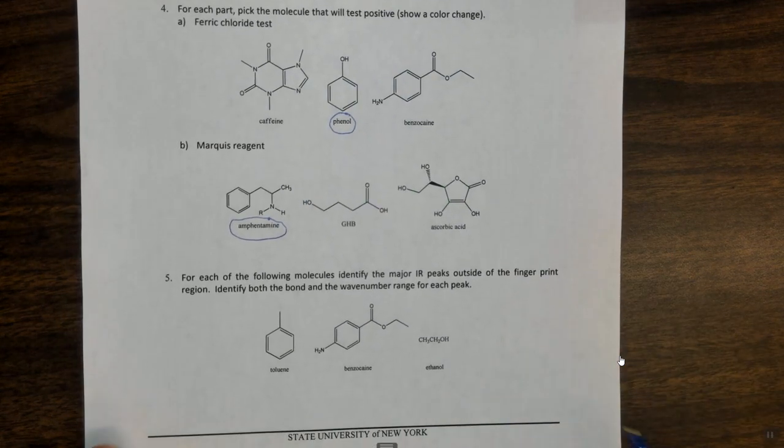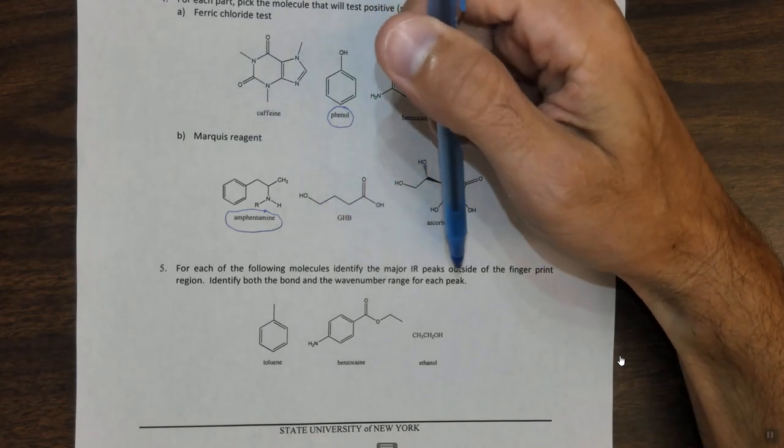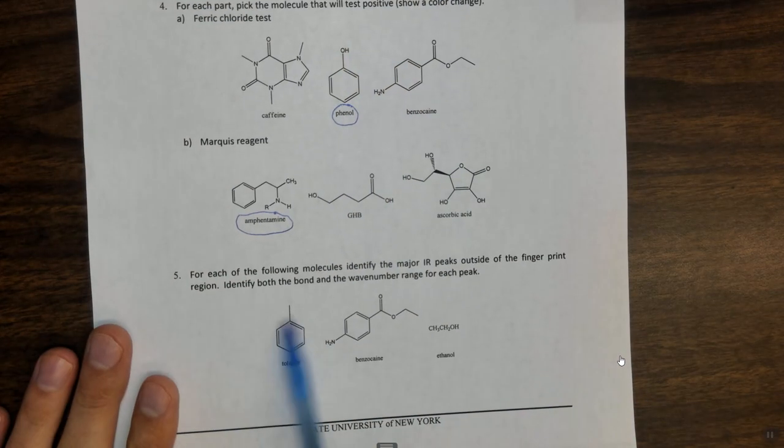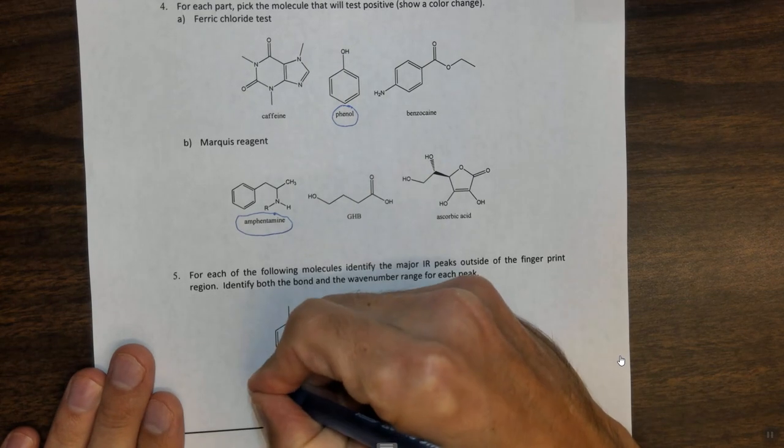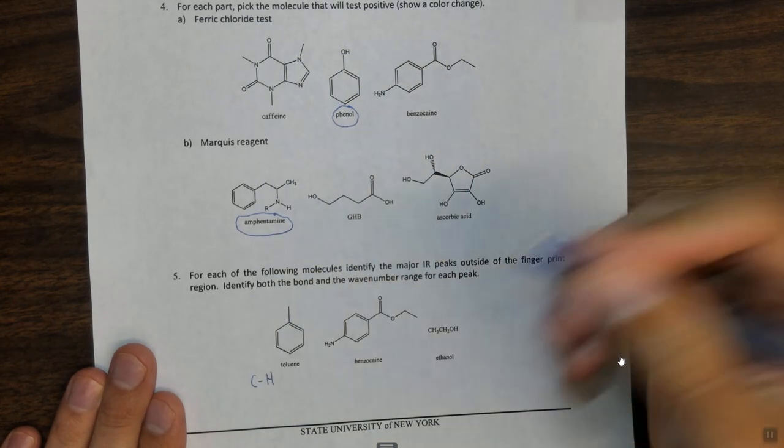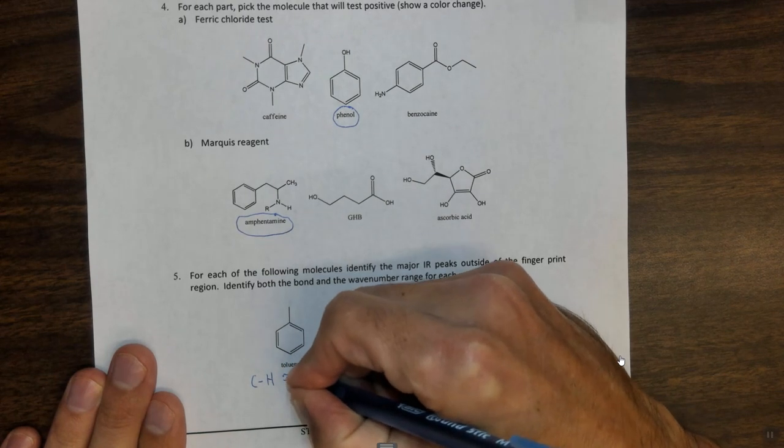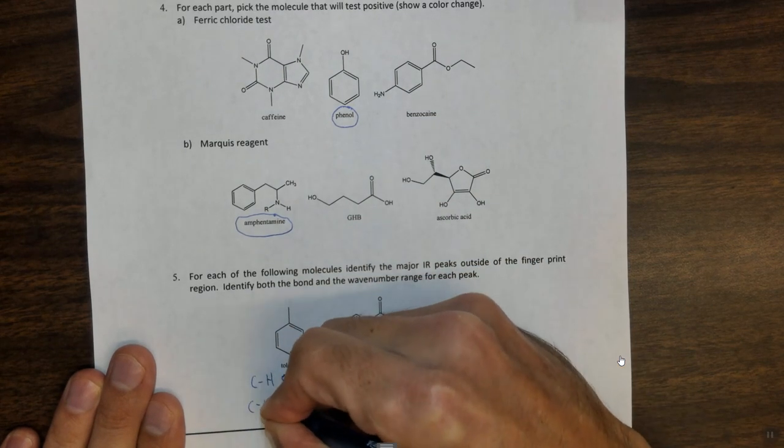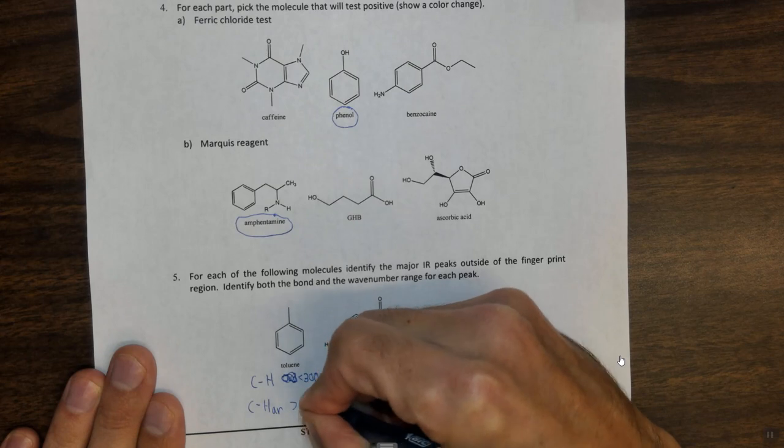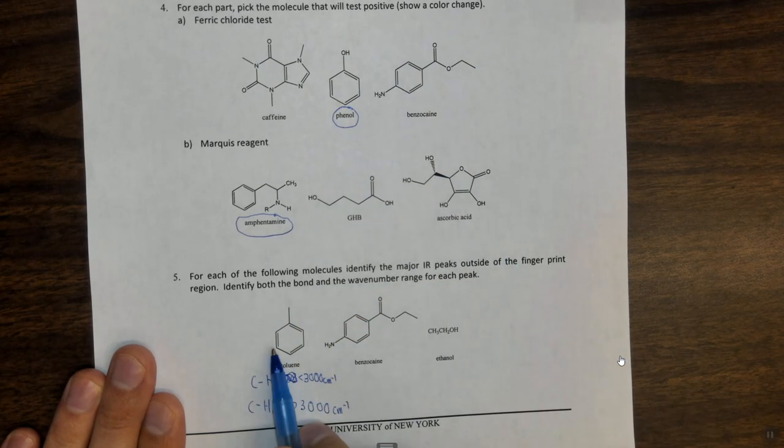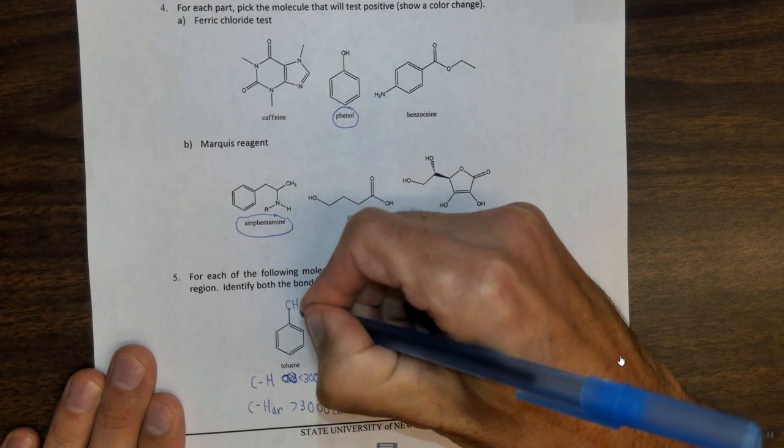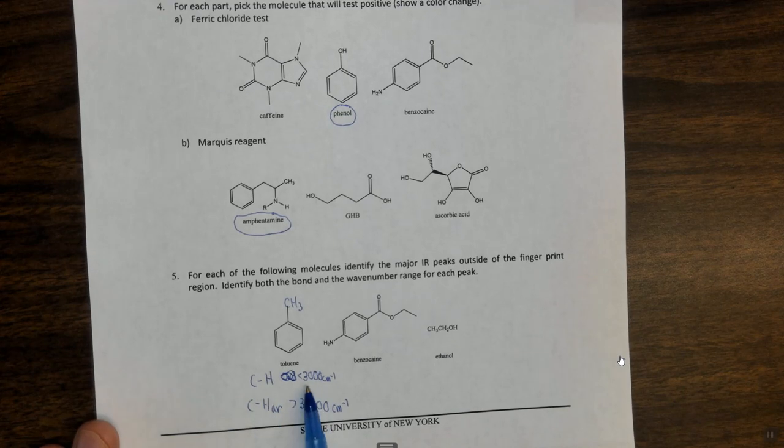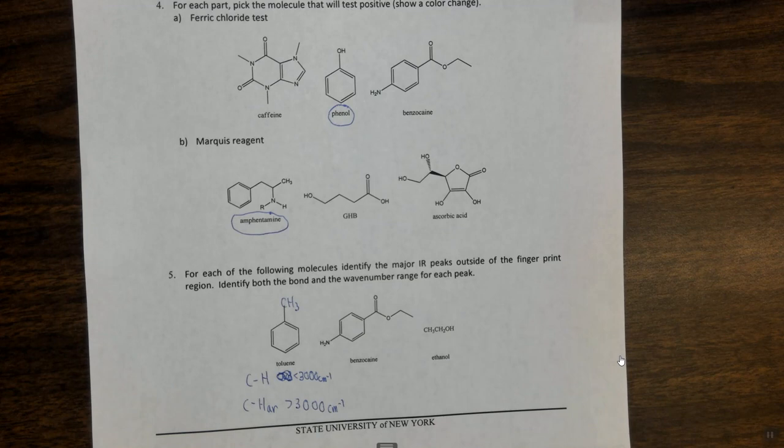Last one, it says for each of the following molecules identify the major IR peaks outside of the fingerprint region. Identify both the bond and the wave number range for each peak. So the first thing is we have a common solvent, toluene. This is going to have a CH that's not aromatic at approximately less than 3,000 centimeters to the minus one. And then it's going to have a CH that is aromatic at greater than but around 3,000 centimeters to the minus one. So you have these aromatic CHs and you have this CH3 up here, so therefore this is going to have both the regular CH, the non-aromatic or aliphatic CH less than 3,000, and it's going to have the aromatic CH at slightly above 3,000.